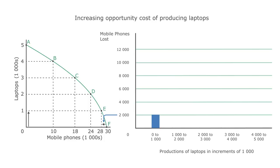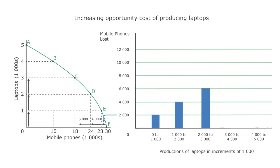Another increase in the production of laptops from one thousand to two thousand results in four thousand fewer mobile phones being produced. And if we increase the production of laptops by another thousand, this results in a further six thousand fewer mobile phones being produced. Moving from point C to point B, the opportunity cost of producing laptops rises even more, and eight thousand mobile phones must be sacrificed to increase the production of laptops from three thousand to four thousand.